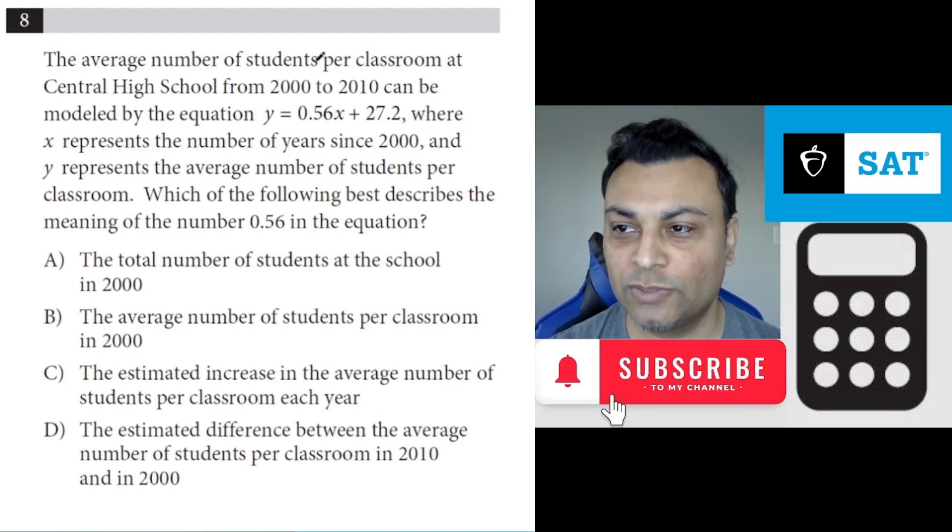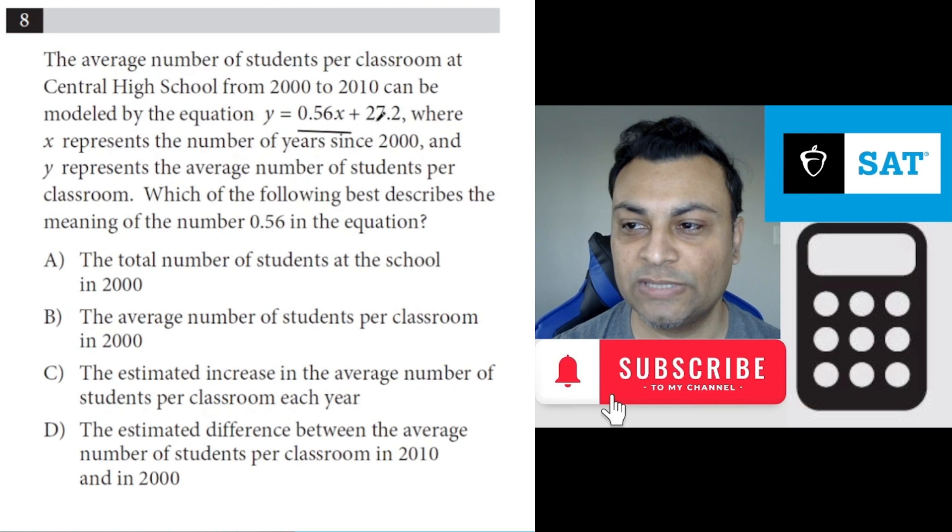Question 8 says the average number of students per classroom at Central High School from 2000 to 2010 can be modeled by the equation y equals 0.56x plus 27.2, where x represents the number of years since 2000 and y represents the average number of students per classroom.